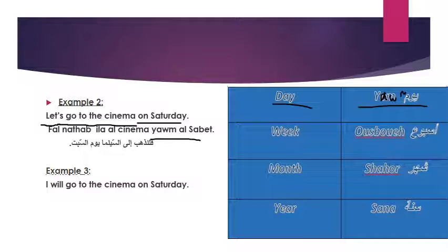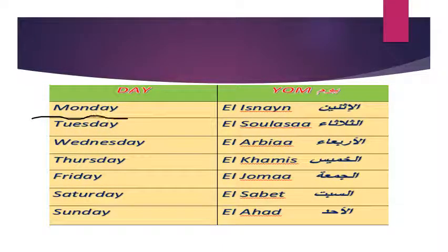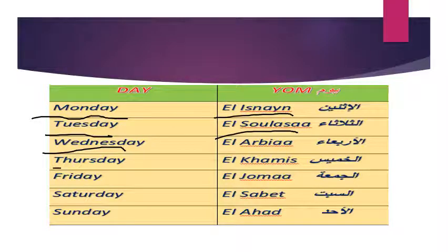Now let's change the tense. 'I will go to the cinema on Saturday' — we use سـ or سوف for the future. So: سوف أذهب إلى السينما يوم السبت. The days of the week are: Monday — الاثنين, Tuesday — الثلاثاء, Wednesday — الأربعاء, Thursday — الخميس, Friday — الجمعة, Saturday — السبت, Sunday — الأحد. We need to know and study these, and we should start from Monday.